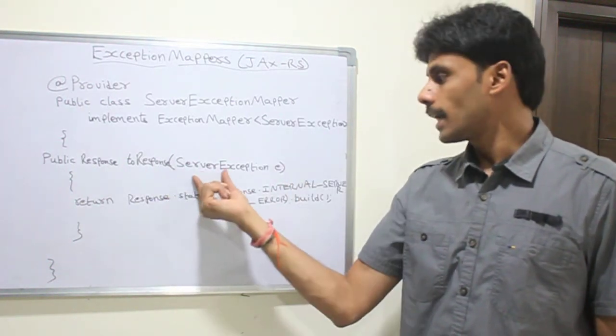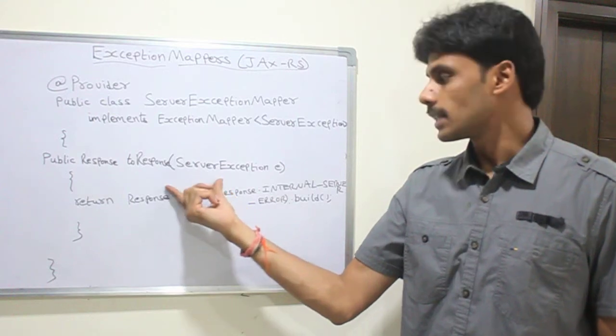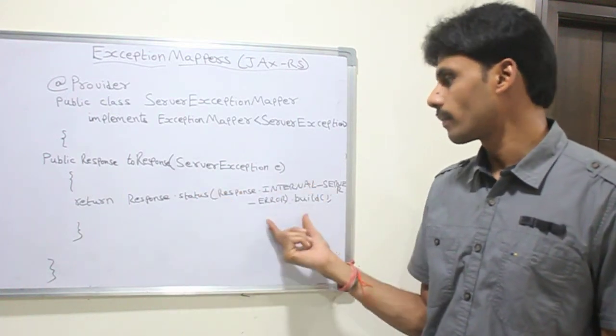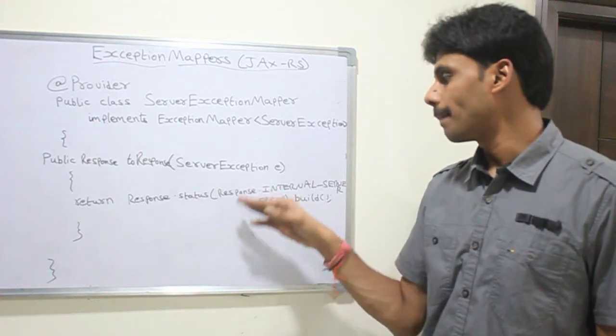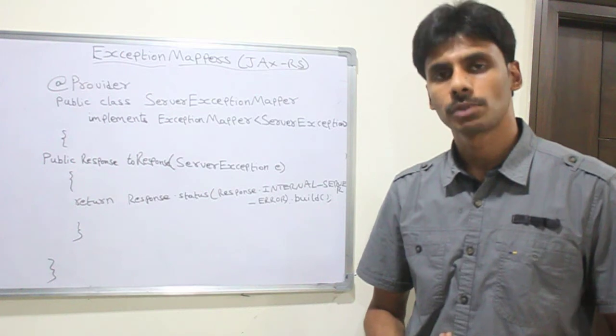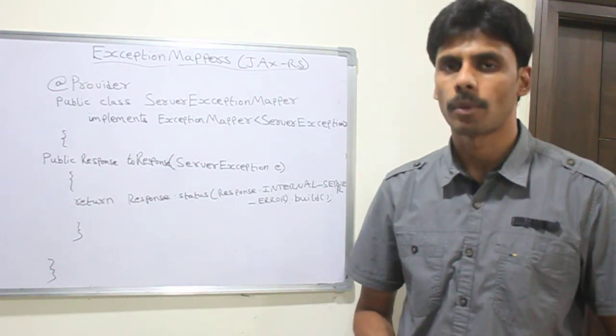Then the toResponse method takes the argument - the argument it takes is your exception. And in here you can use what comes out of that exception or simply map that exception to an HTTP response code that should go back which is appropriate.